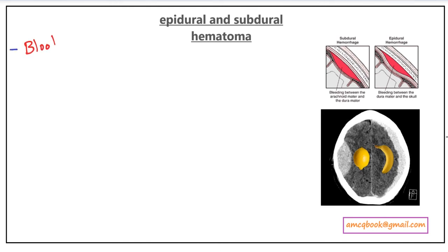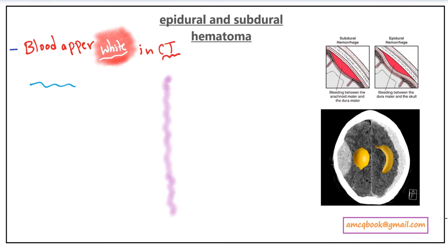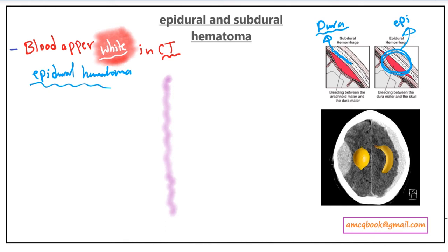In epidural and subdural hematoma, blood appears white on CT scan — this is important information to remember. Looking at the picture in the top right corner, the white color represents the dura mater. If blood accumulates above it, it's called epidural hematoma; if it accumulates below it, it's called subdural hematoma.